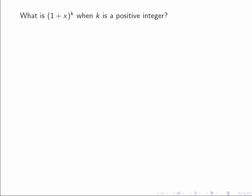Let's start by looking at the case where k is a positive integer. We know (1+x)^2 = 1+2x+x^2, a familiar result from school.